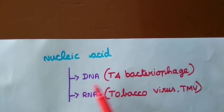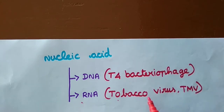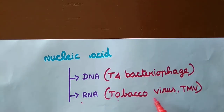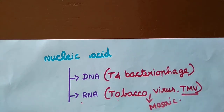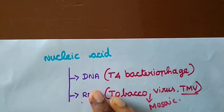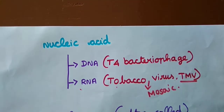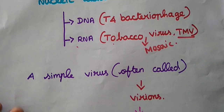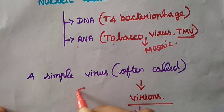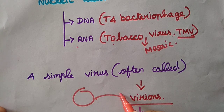The nucleic acid in a virus may be DNA — for example, T4 bacteriophage — or RNA — for example, tobacco mosaic virus (TMV). The simple particle of a virus is called a virion.